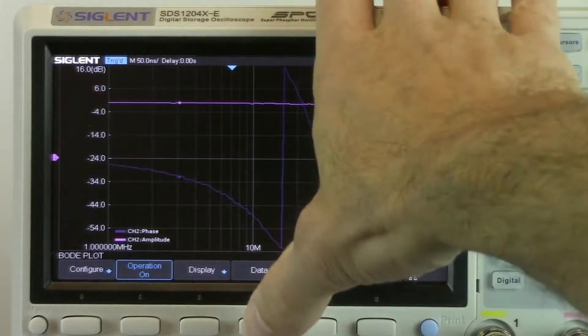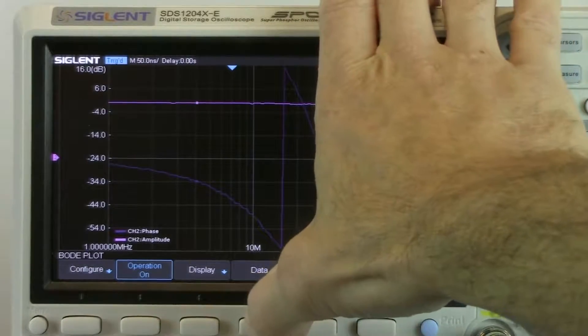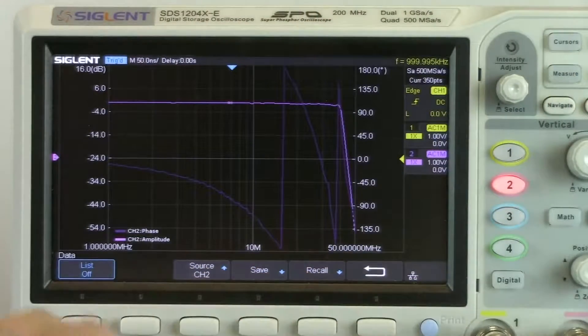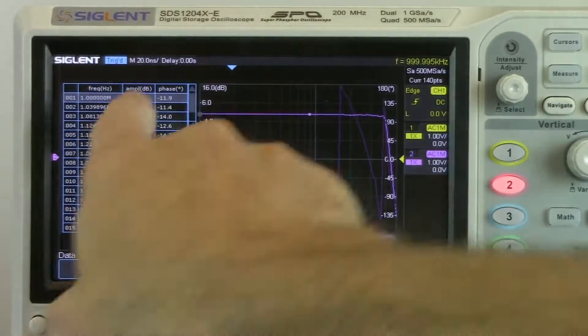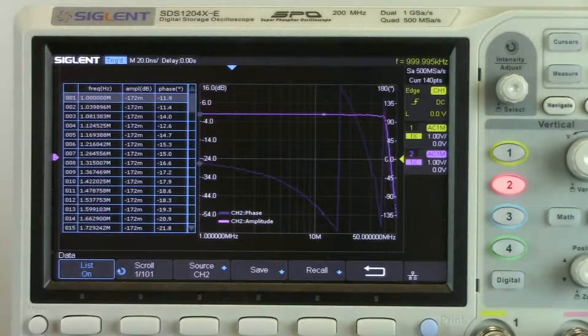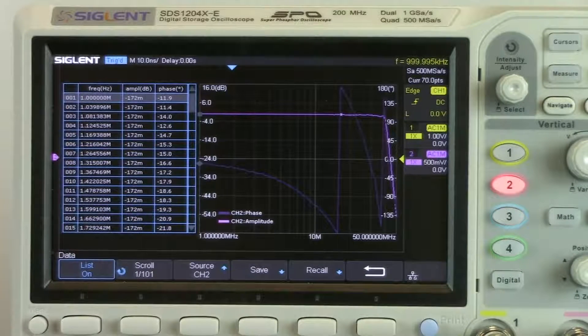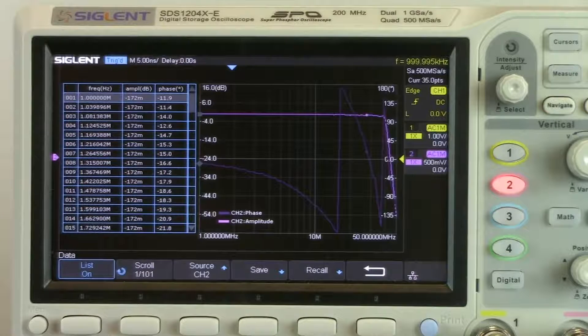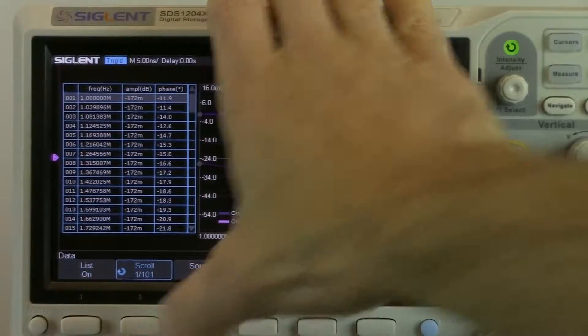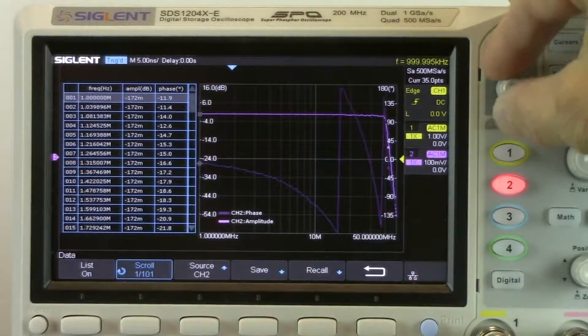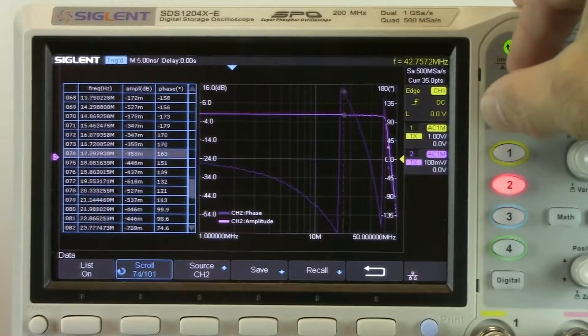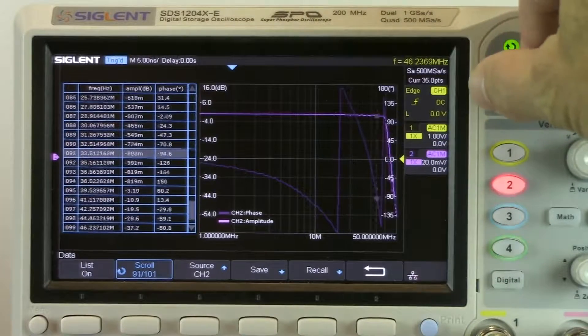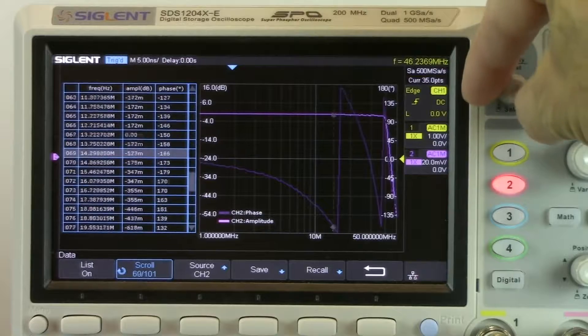We can also take a closer look at the data. So we can go over to data and we can go to list. The list is going to give us a full list of all of the values that we've collected. So it has the frequency, it has the amplitude, and it has the phase measurement at each one of those individual points. We can select scroll, and then we can scroll through each individual line and each individual value. And you can see that the point that we're looking at is indicated by these gray cursors in both the amplitude and the phase scale.